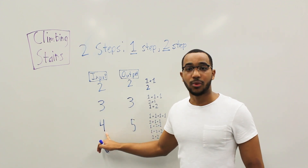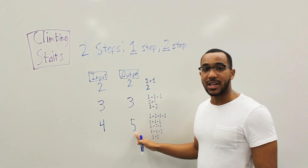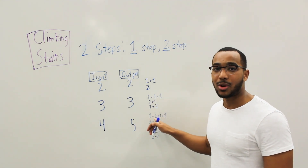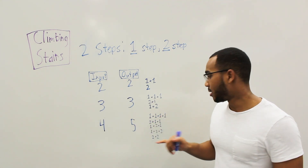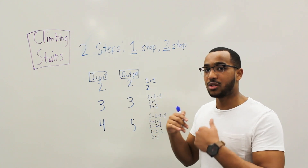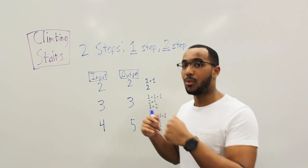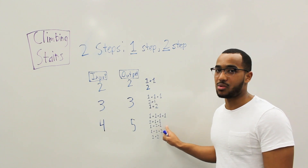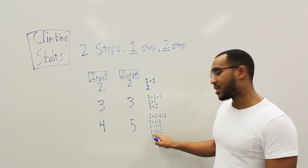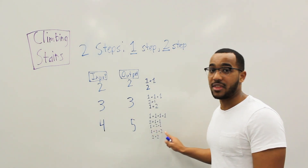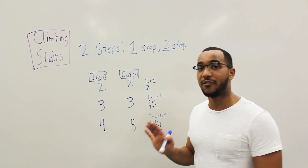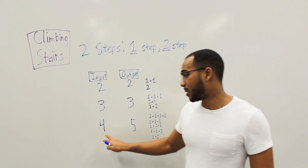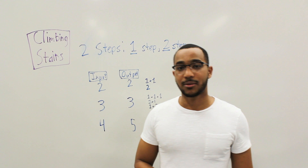If I need to do four steps, the number of unique ways is five. I can take one, one, one, one; or two, one, one; or one, two, one; or one, one, two; or finally just two and two. So that adds up to four steps in five distinct ways.